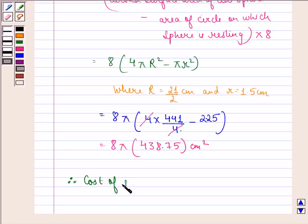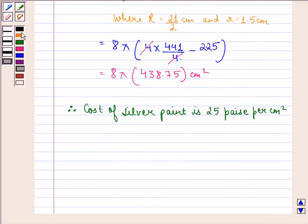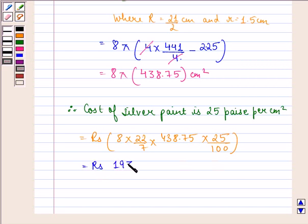Therefore, cost of silver paint at the rate 25 paise per cm², that means for 1 cm² it is 25 paise. So for 8π into 438.75 cm² it will be rupees 8 into 22 by 7 into 438.75 into 25 by 100. Now we divide this by 100 to get it in rupees. When we calculate this we get rupees 2757.86 approximately.